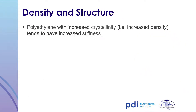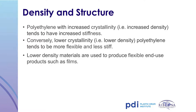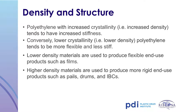How do density and crystallinity affect the properties of polyethylene? Polyethylenes with increased crystallinity or density tend to have increased stiffness. Conversely, resins with lower crystallinity or density are more flexible. Typically, lower density materials are used to produce flexible products such as films and squeeze bottles, while higher density materials are used to produce more rigid products such as drums, IBCs, and jerry cans.